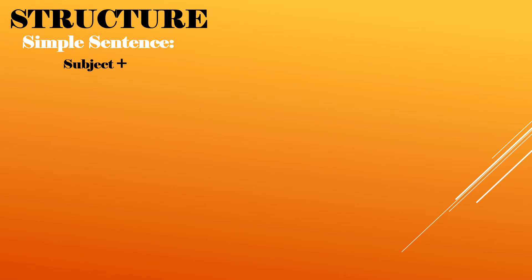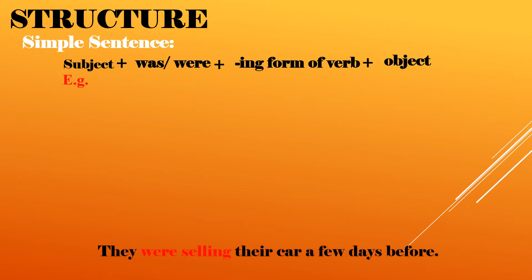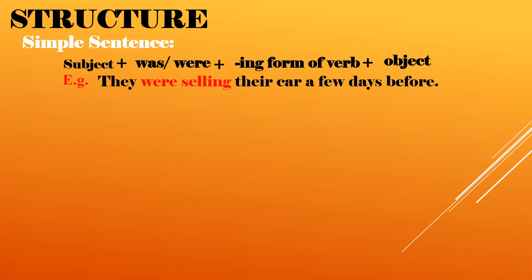All right dear students, let's move ahead with the structure of past continuous tense. First, have a look at the structure of simple sentence: subject plus was or were as helping verbs or auxiliary verb, then -ing form of a verb, and then in the end we place object. For example, they were selling their car a few days before. They is the subject, were is the helping verb, selling is the -ing form of a verb, their car is an object. Aslam was dozing in the class during the lesson. Aslam is the subject, was is the helping verb, dozing is the main form of a verb.